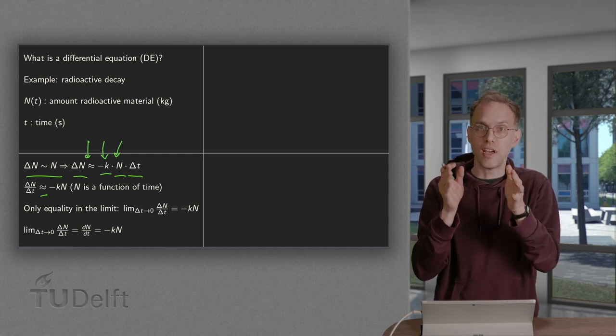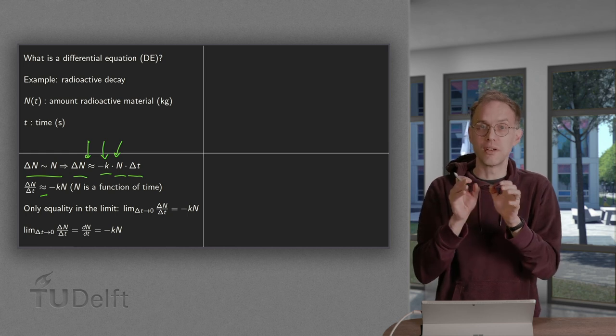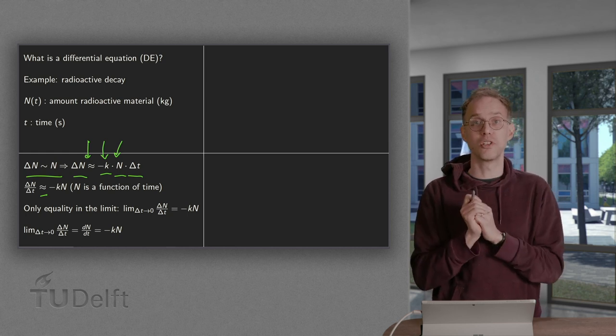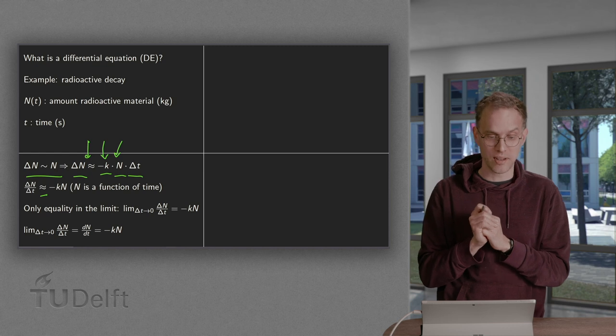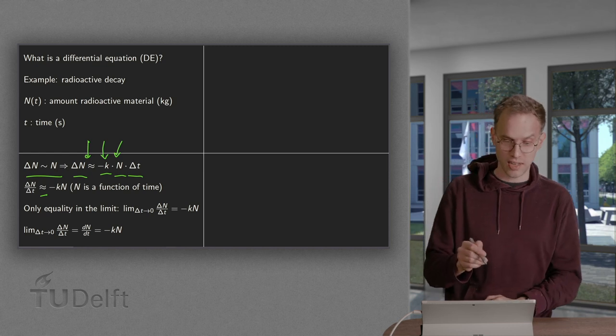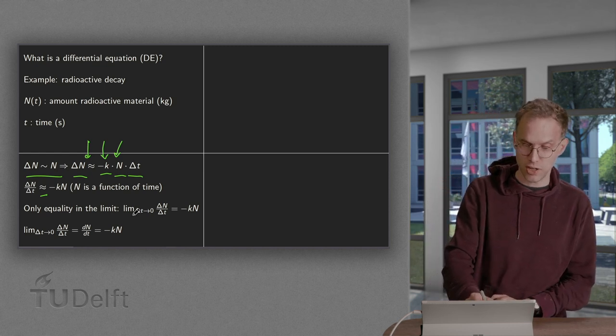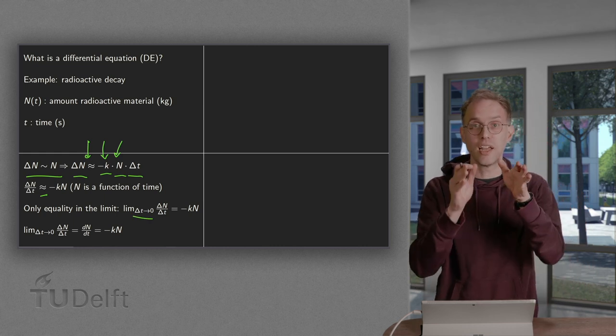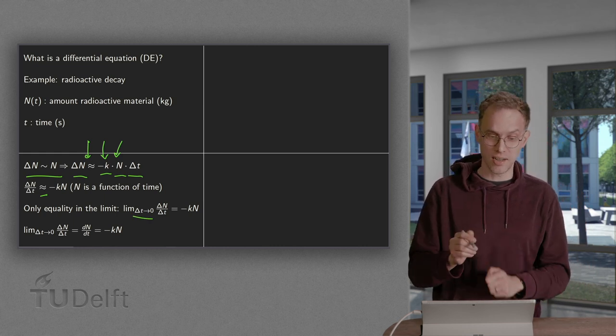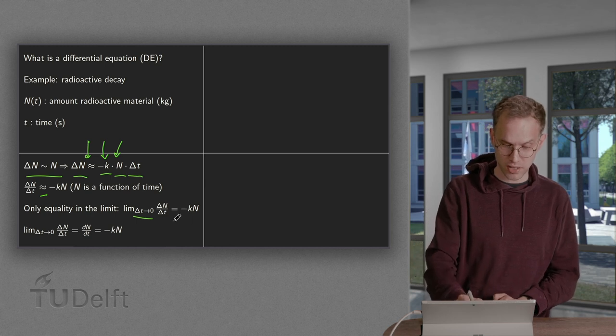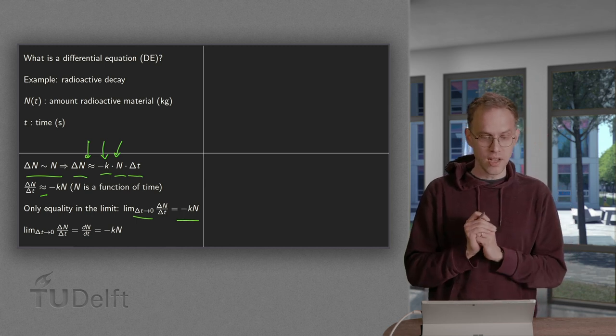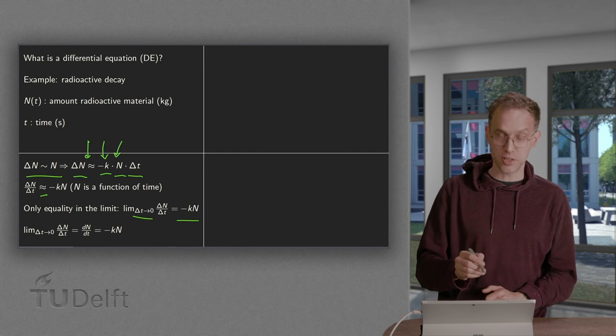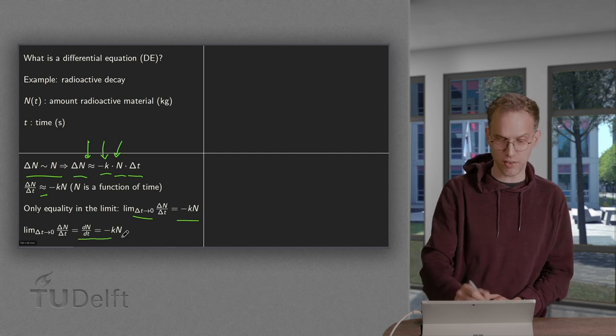Because only if we have a very small time interval, we can have more or less constant quantity capital N. So that's what we do. We take the limit delta T to zero. If you take the limit delta T to zero, delta N over delta T becomes dN/dt. And that equals minus K times N.